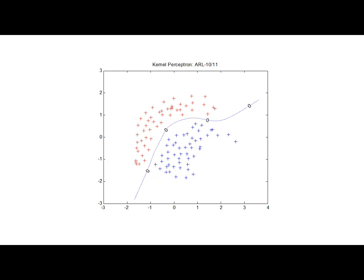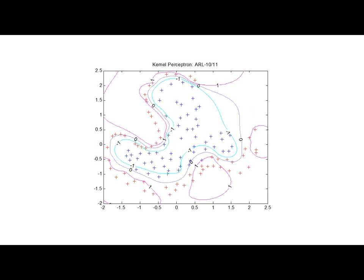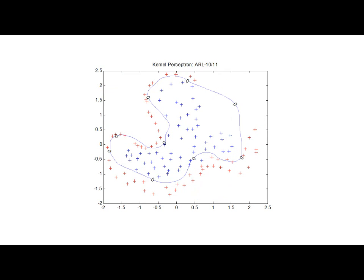Here is the result of using the kernel perceptron learning algorithm. The kernel used was a Gaussian kernel with sigma squared equal to one, applied to the data set introduced earlier in this lecture. The contour plot showing just the zero-level contour demonstrates that the kernel perceptron learning algorithm with Gaussian kernel (sigma squared = 1) performs quite well on this kind of data set.